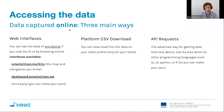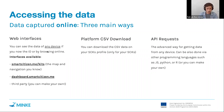The first way is through web interfaces. On smartcitizen.me/kits you have the map and navigation that you probably already know. You can see the data of any device either by browsing on the map or by knowing the device ID, which is unique to each device and is appended to the URL on smartcitizen.me/kits.